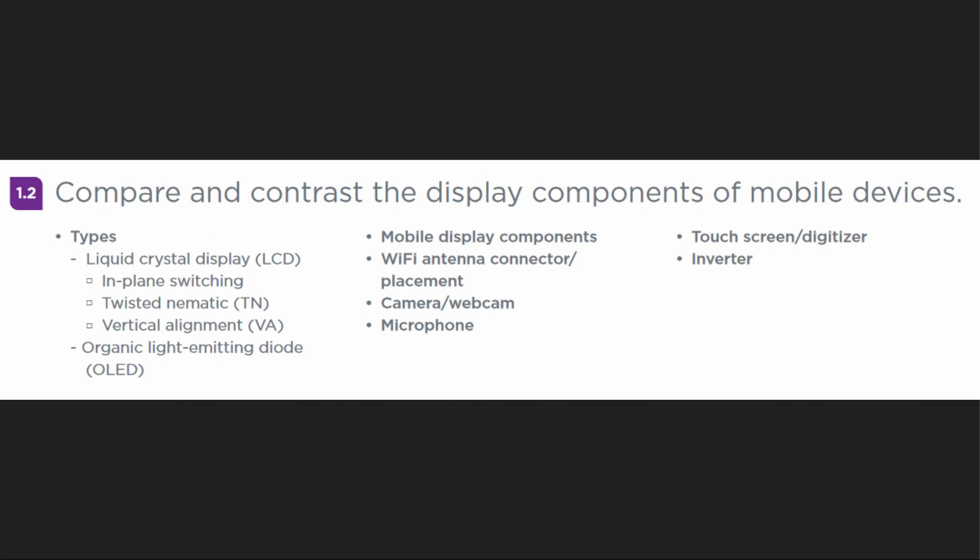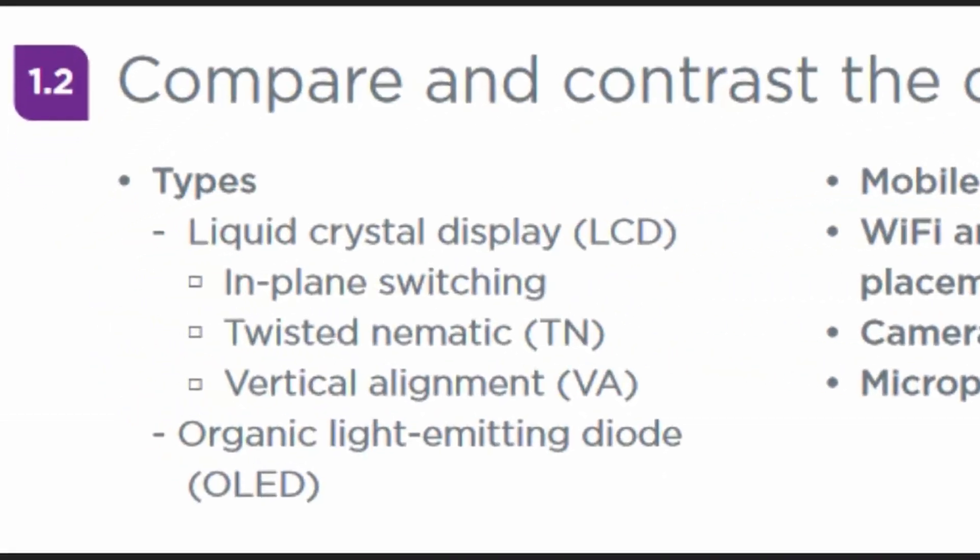Exam objective 1.2: compare and contrast the display components of mobile devices. We're going to go through the different types of displays for mobile devices, which will include liquid crystal display and the different types: in-plane switching (IPS), twisted nematic (TN), and vertical alignment (VA). You've also got organic light emitting diode, which is OLED.